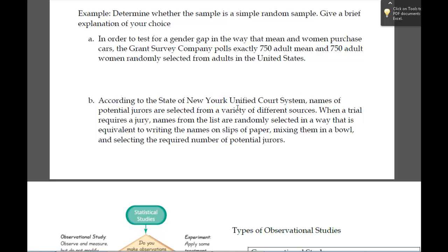According to the State of New York Unified Court System, names of potential jurors are selected from a variety of sources. When a trial requires a juror, names from the list are randomly selected in a way that is equivalent to writing the names on slips of papers, mixing them in a bowl, and selecting the required number of potential jurors. Is this a simple random sample? Yes. Usually you need, what, 12 people on the jury? Since we're kind of, everybody has an equal chance, pulling them out of the bowl, we've got an equal chance of every group of size 12 being selected. So we would say yes for that one. Any questions about that?